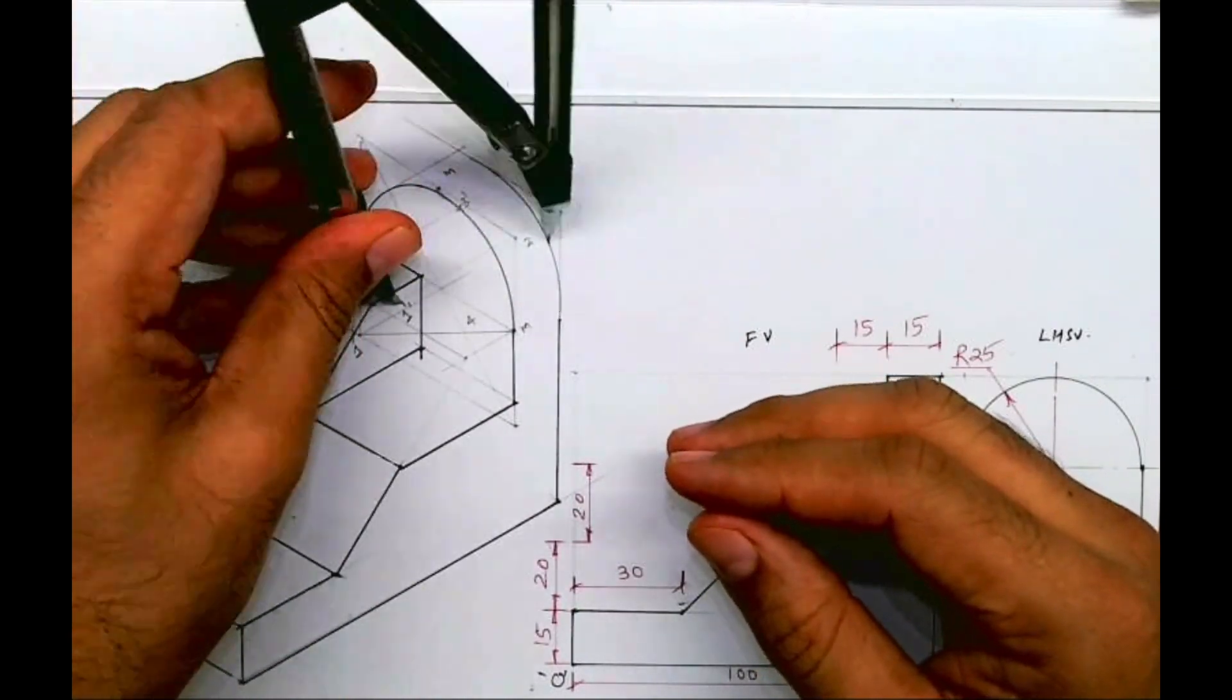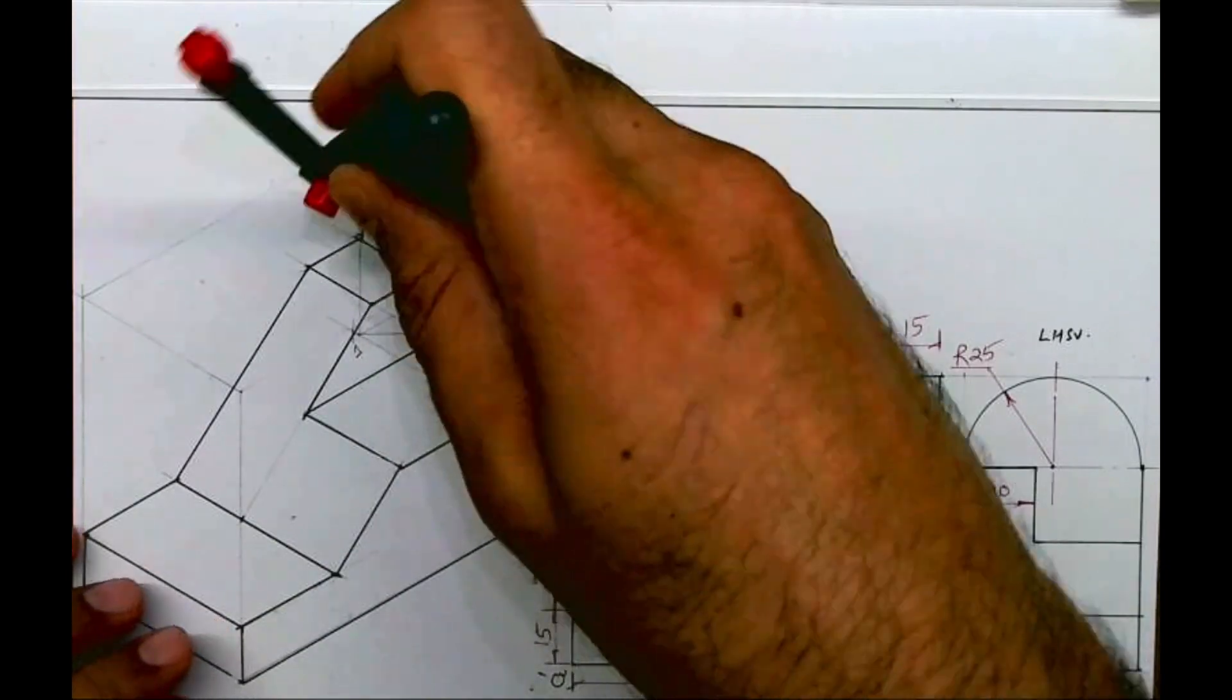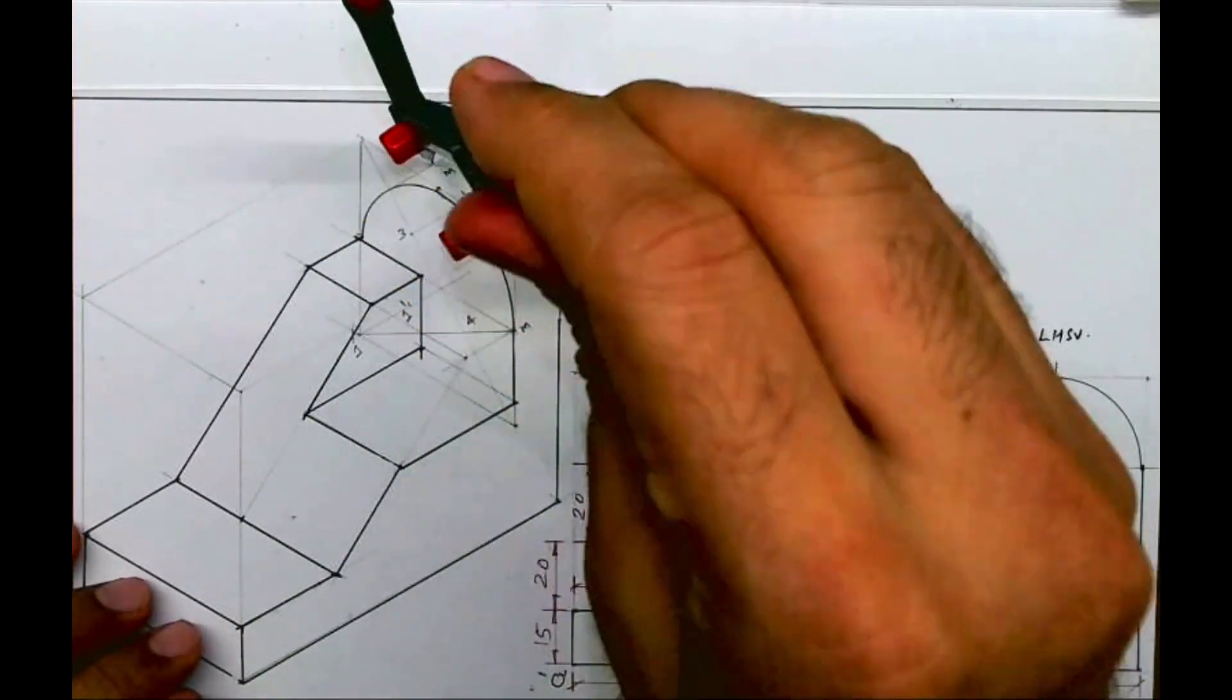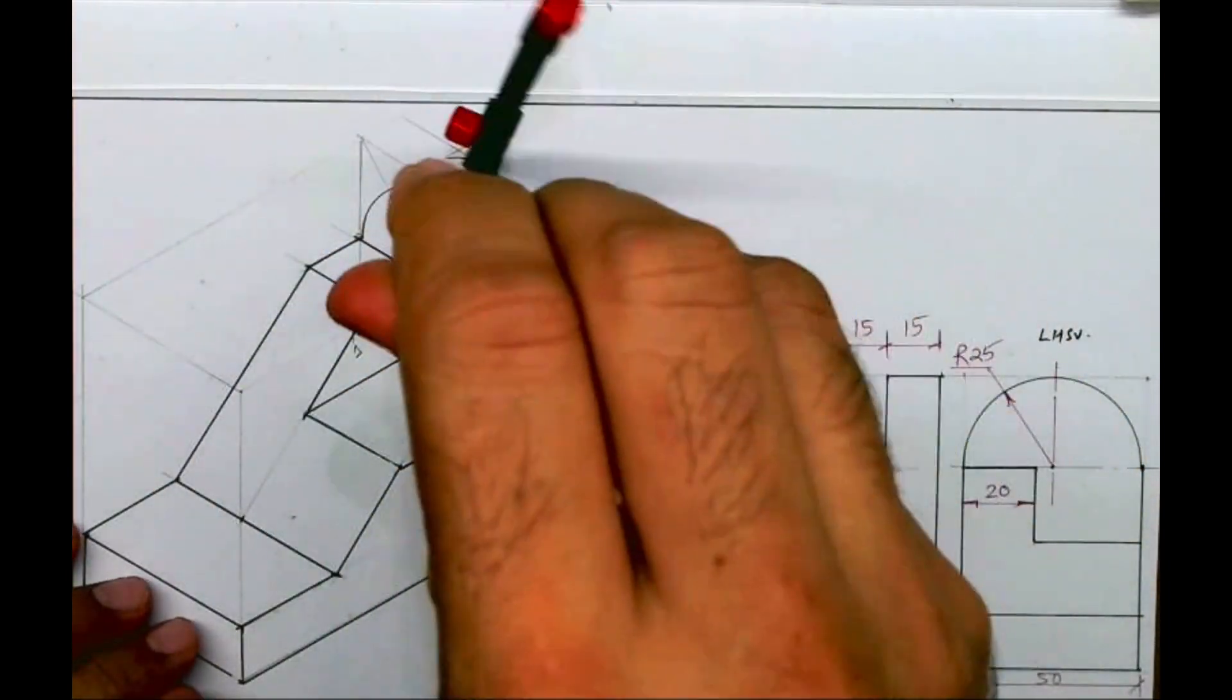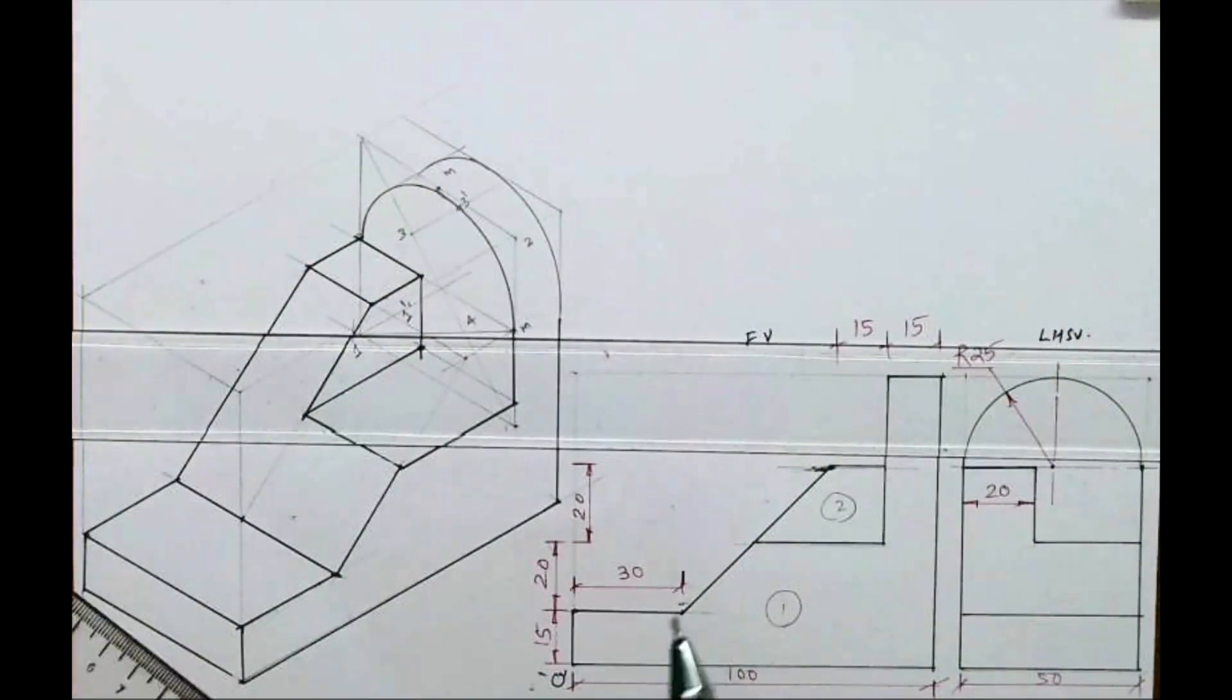Same way we'll take 3 to M, whatever radius we have. We'll go behind by 15, 3 dash, and we'll draw R. And then we draw tangent. Like this. So this is how you'll get this sum.